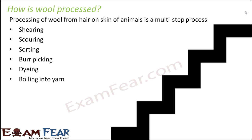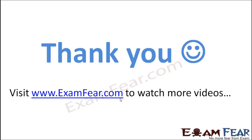The first step is shearing, followed by scouring, sorting, bird picking, dyeing, and finally rolling into yarns. The wool yarns are what we get in the markets. Once we get them, we start weaving them to make sweaters, clothes, jackets, and many other things. Let us understand this entire process step by step.